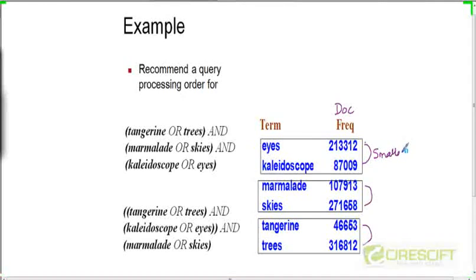So because this is the smallest and this is the second smallest, we are going to do eyes or kaleidoscope ANDed with tangerine or trees. So I've parenthesized these two terms over here. So we're going to take this AND operation first and then we are going to do this particular AND operation.